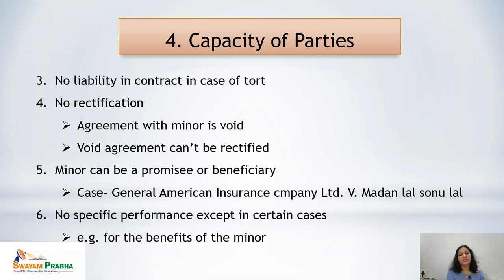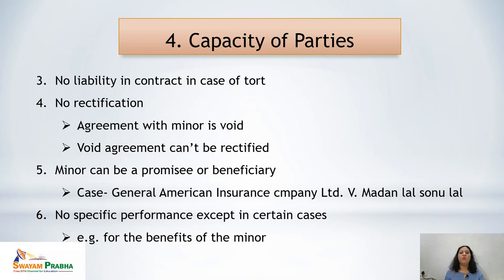No rectification is possible — a contract made by a minor cannot be ratified on attaining majority, because when the contract was made it was void and the law does not allow ratification of void agreements.